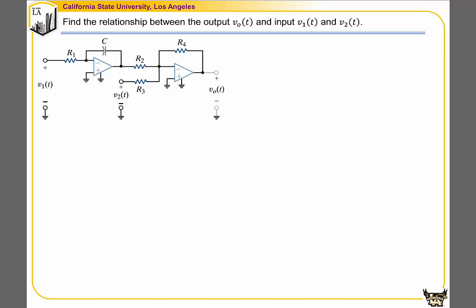In this example, we're going to find the relationship between the output V0 and the inputs V1 and V2. This network contains two op-amps: op-amp 1 is set up as an integrator, and op-amp 2 is set up as a summer of two signals.